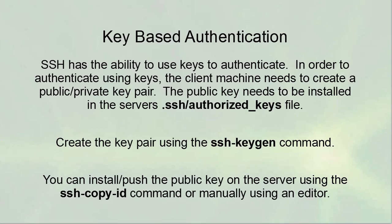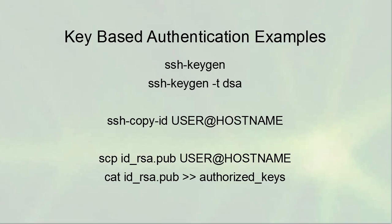SSH can use keys to authenticate. The client machine needs to create a public/private key pair, and the public key must be installed on the server in each user's authorized_keys file. You can create key pairs using the ssh-keygen command, specifying the type with the -t option. You can then install the key using ssh-copy-id, or manually copy it with scp and append it to the authorized_keys file using the cat command.